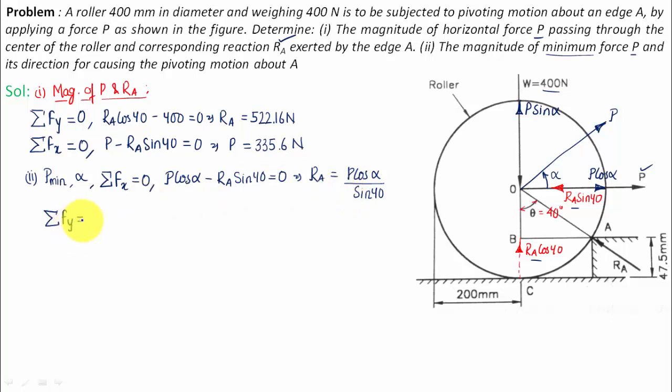Now I'm going to go ahead and use the second equation of equilibrium: summation of Fy is equal to zero. So P sin alpha, it's positive upper direction, 400 is negative downward direction, and we have this RA cos 40. So let me write this: P sin alpha plus RA cos 40 minus 400 shall be equal to zero. Let us write this again: P sin alpha plus RA, so we have the value of RA over here, P cos alpha over sin 40, multiplied by cos 40, minus 400 equals zero. Shifting 400 towards the right hand side, it becomes positive.